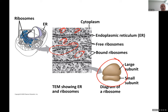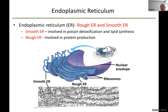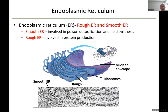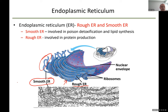Ribosomes attached to the endoplasmic reticulum form the rough ER, or rough endoplasmic reticulum. We also have smooth ER — smooth endoplasmic reticulum — where there are no ribosomes attached.